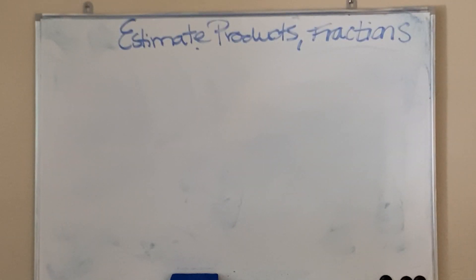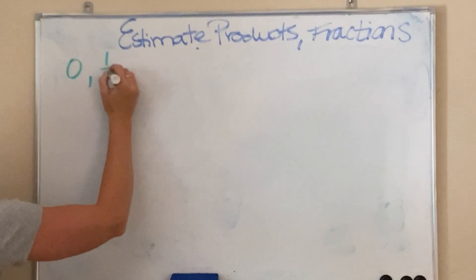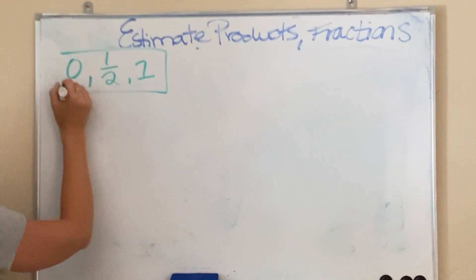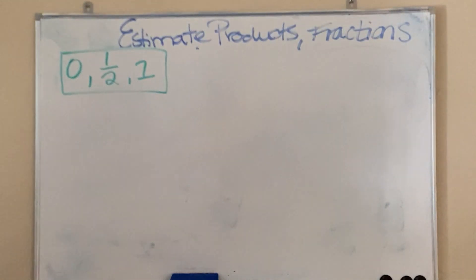Hi, everyone. This video is showing you how to estimate fractions in order to multiply. We are going to be rounding these fractions to one of the following: either round it to a zero, a half, or a whole. And that only applies to this lesson. So, if you're following along, we are in Chapter 10, Lesson 2.